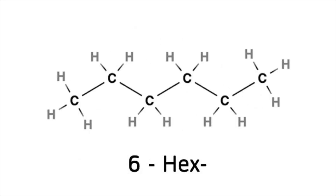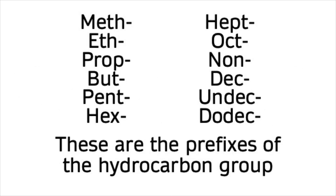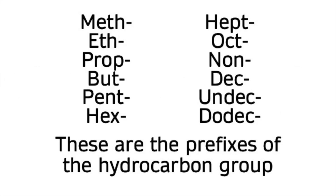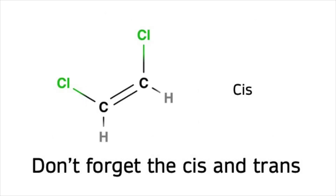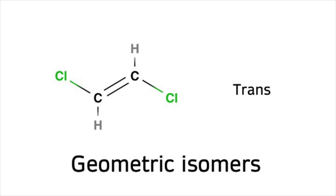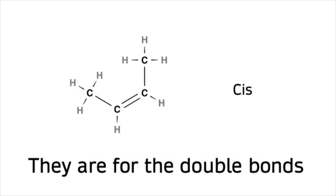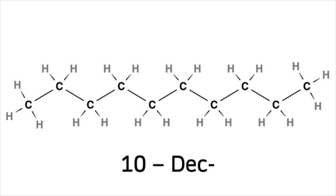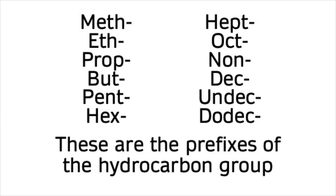Meth-eth-prop-but-pent-hex-hept-oct-non-dec-undec-dodec — these are the prefixes of the hydrocarbon group. Don't forget the cis and trans geometric isomers — they are for the double bonds, which cannot rotate.